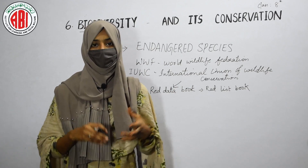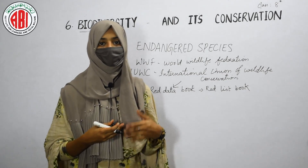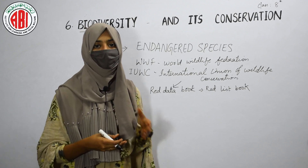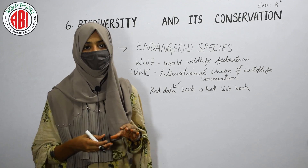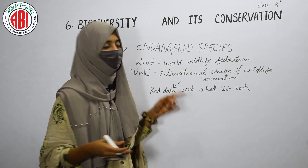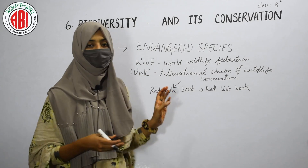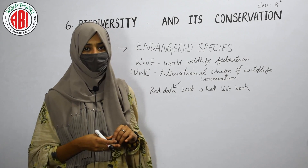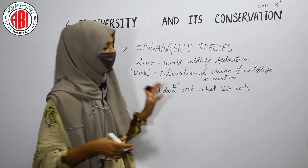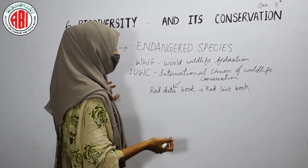The Red Data Book serves as a warning signal to take care of endangered species, because if we do not follow any steps or take measures to protect them, they will become extinct and completely vanish from our environment. The book also contains a list of endangered species found specifically in India, so that measures can be taken to protect them.